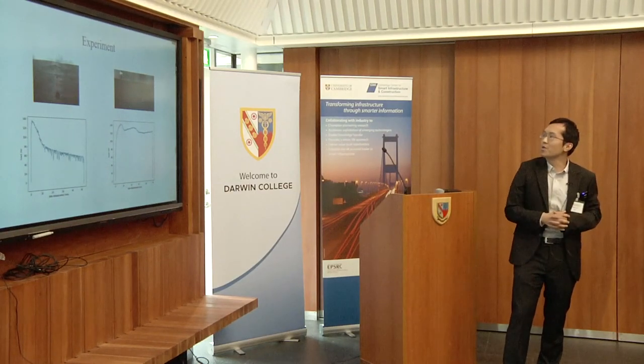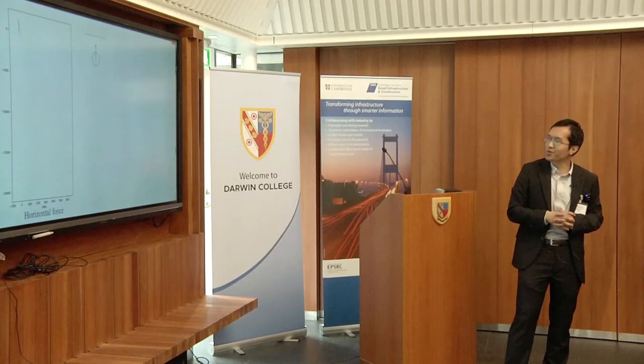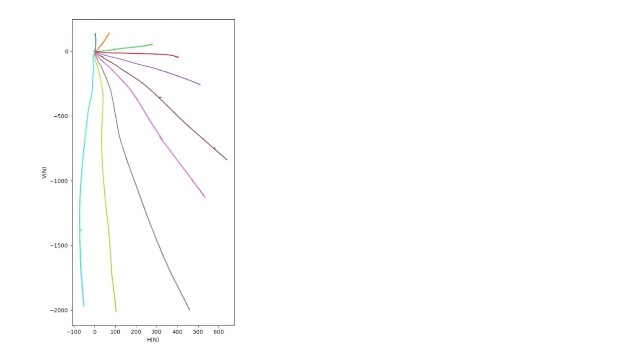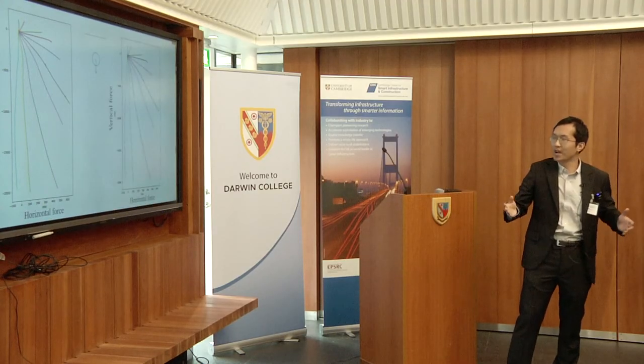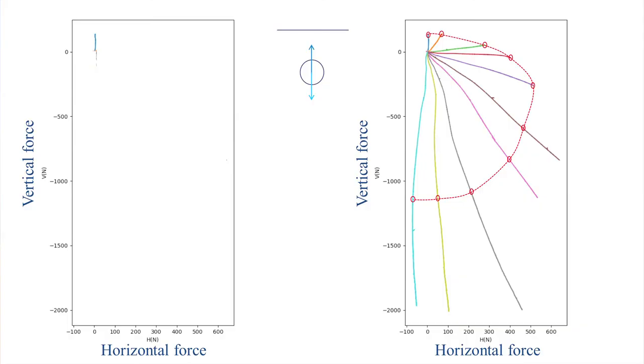The next step is to determine the break-off forces. We use the peak values as the failure loads. We then summarize all the test data into one figure, where the x-axis is the horizontal force and the y-axis is the vertical force. The blue short line is the load curve for upward pipe movement, the light blue line is for downward movement with a much higher magnitude, and different colored curves represent different moving directions. We identify the failure loads as red dots, then connect them to develop a failure envelope that engineers can use easily.